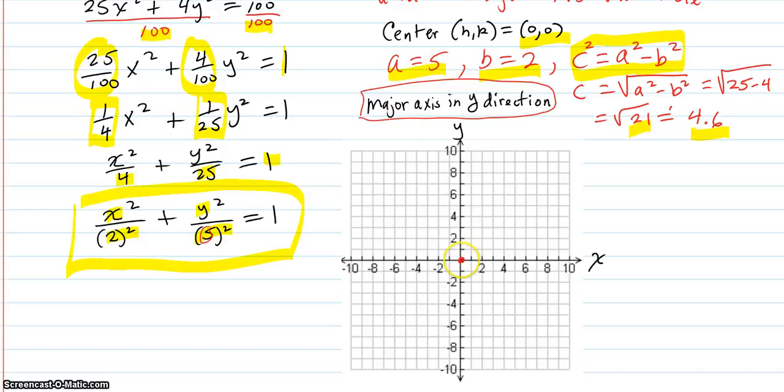So we're going to count over 5. 1, 2, 3, 4, 5 in the y direction. 1, 2, 3, 4, 5 in the y direction. Might as well label those as 0, 5 and 0, negative 5.